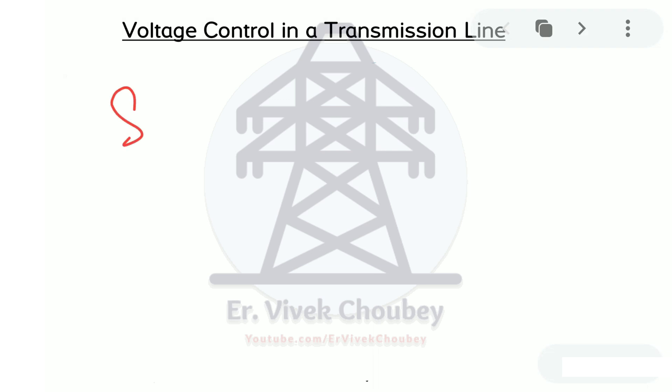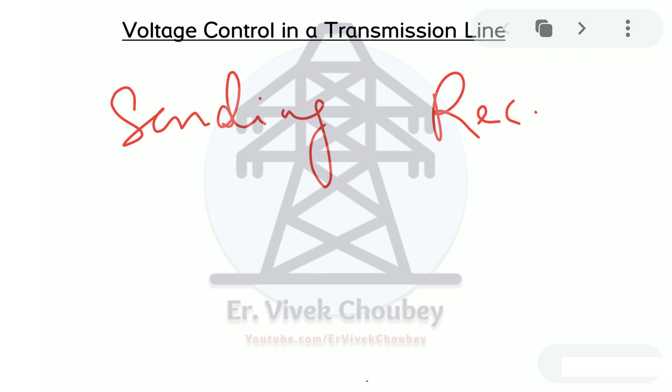A transmission line has two sides: the sending end side and the receiving end side. The sending end side has the voltage Vs and the receiving end side has the voltage Vr. Because of the line impedance, some voltage drop happens, and another reason for this voltage drop is the type of load connected on the receiving end side. These two factors actually change the voltage profile on the receiving end side.